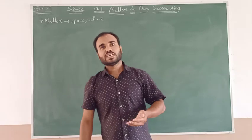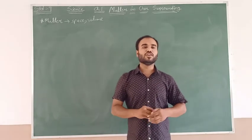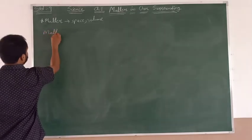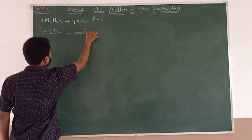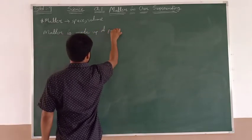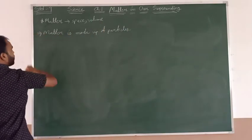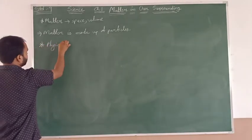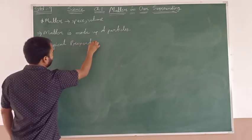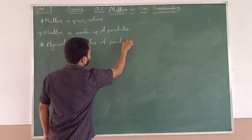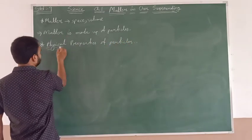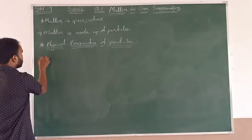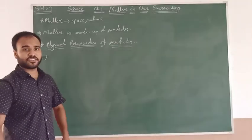The next topic on matter will be the characteristics of particles of matter. First of all, matter is made up of particles. We will now see the physical properties of particles. There are three physical properties of particles. The first one is: particles of matter can attract each other.